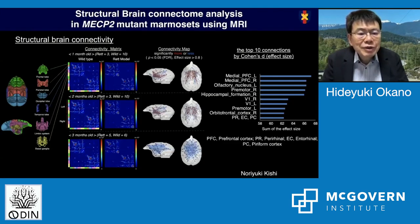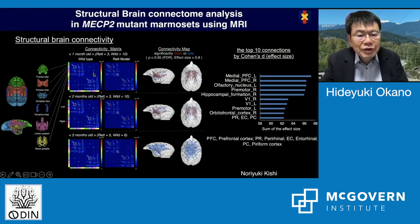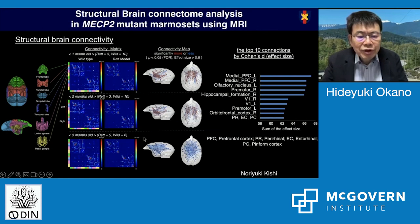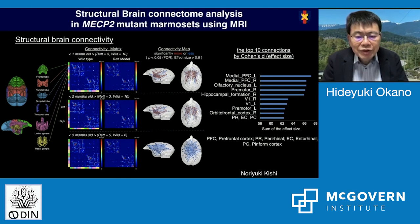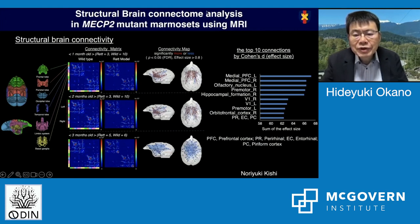We examined brain connectivity by diffusion tensor imaging, particularly cortical interactions. This shows data at one month, two months, and three months for wild-type and MeCP2 knockout marmosets. In the connectivity matrix and connectivity map, at three months you can see an obvious phenotype: essentially all cortical regions show reduced connectivity to each other in MeCP2 mutants. The top ten connections showing the biggest difference between wild-type and MeCP2 mutant are highlighted — among them, the medial prefrontal cortex shows the biggest differences, and visual cortex also shows large differences.